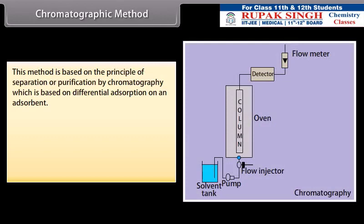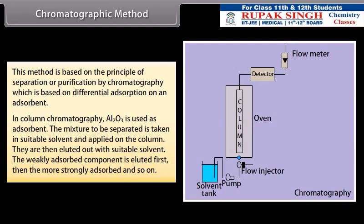Chromatographic method. This method is based on the principle of separation or purification by chromatography which is based on differential absorption on an absorbent. In column chromatography, Al2O3 is used as absorbent. The mixture to be separated is taken in suitable solvent and applied on the column. They are then eluted out with suitable solvent. The weakly absorbed component is eluted first, then the more strongly absorbed and so on. This method is suitable for such elements which are available only in minute quantities and the impurities are not very much different in their chemical behavior from the element to be purified.